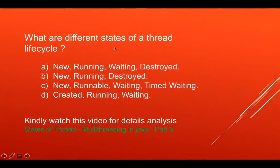The next question is: what are the different states of the thread life cycle? There are four options: A) new, running, wait, and destroy; B) new, running, and destroy; C) new, runnable, waiting, or timed waiting; D) create, running, and waiting. Select the appropriate option. If you have any confusion, refer to the earlier video where six proper states of the Thread class enum are explained, along with the fundamental 'running' concept.